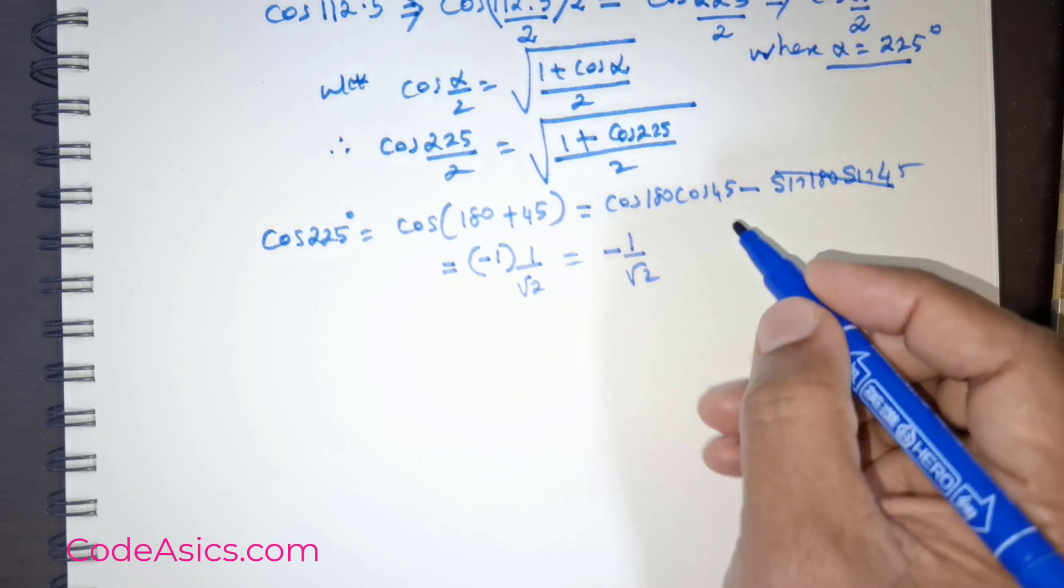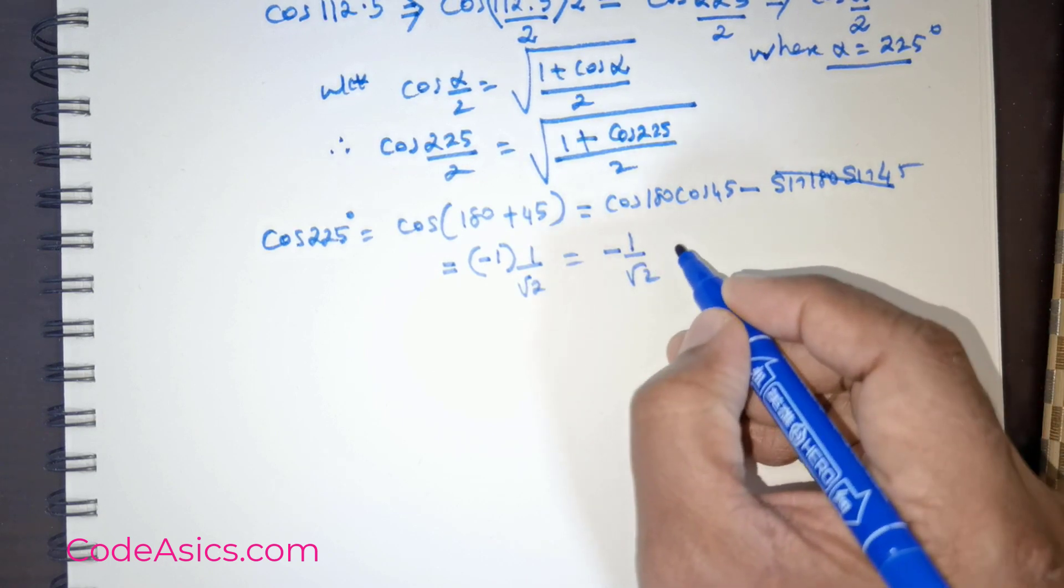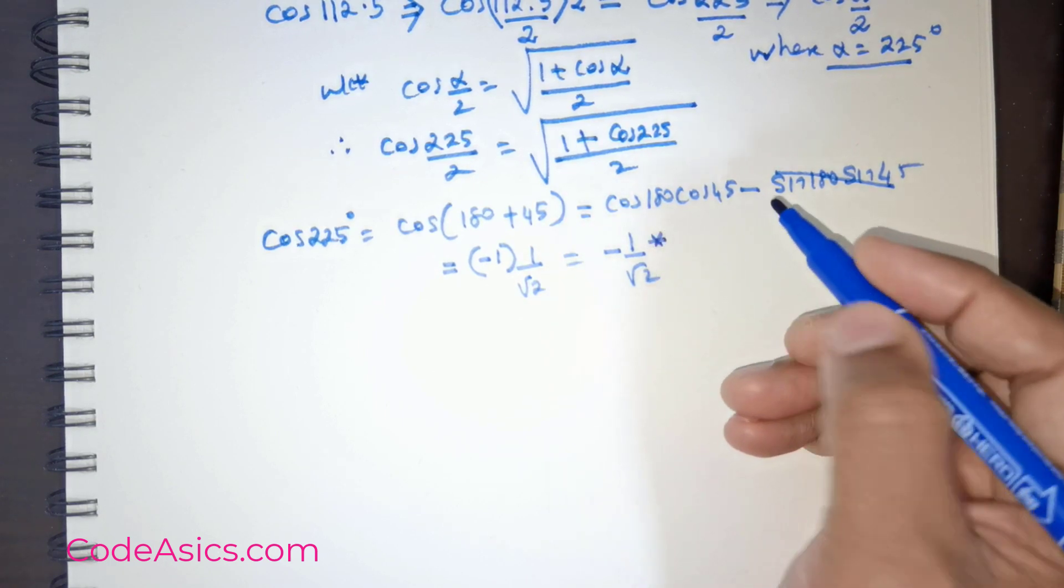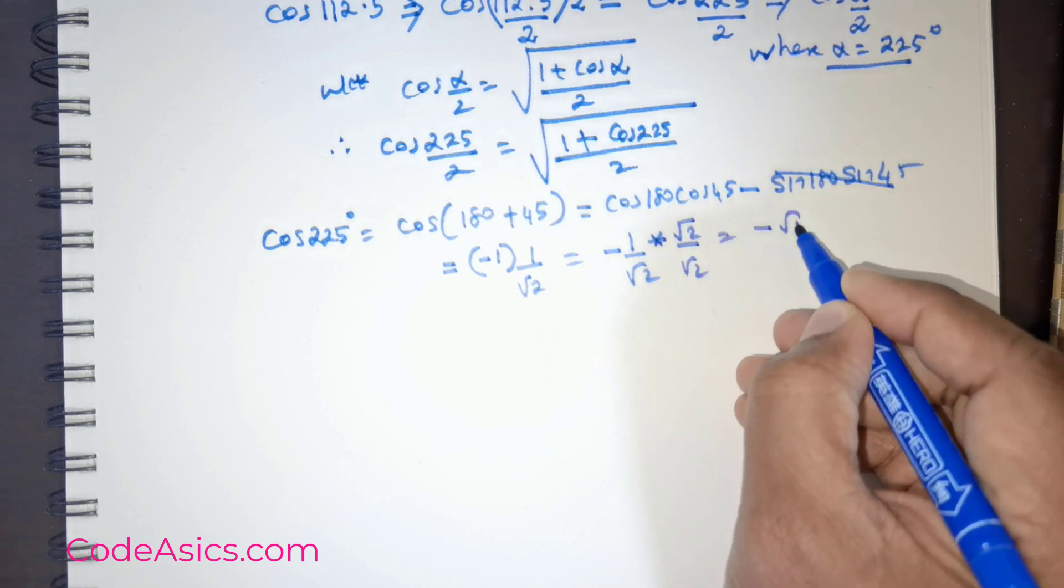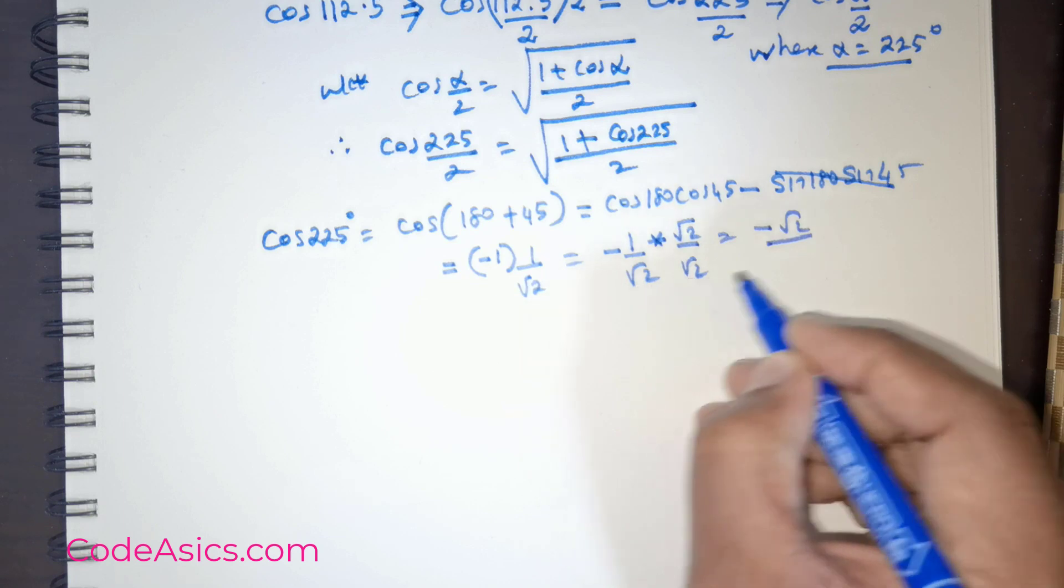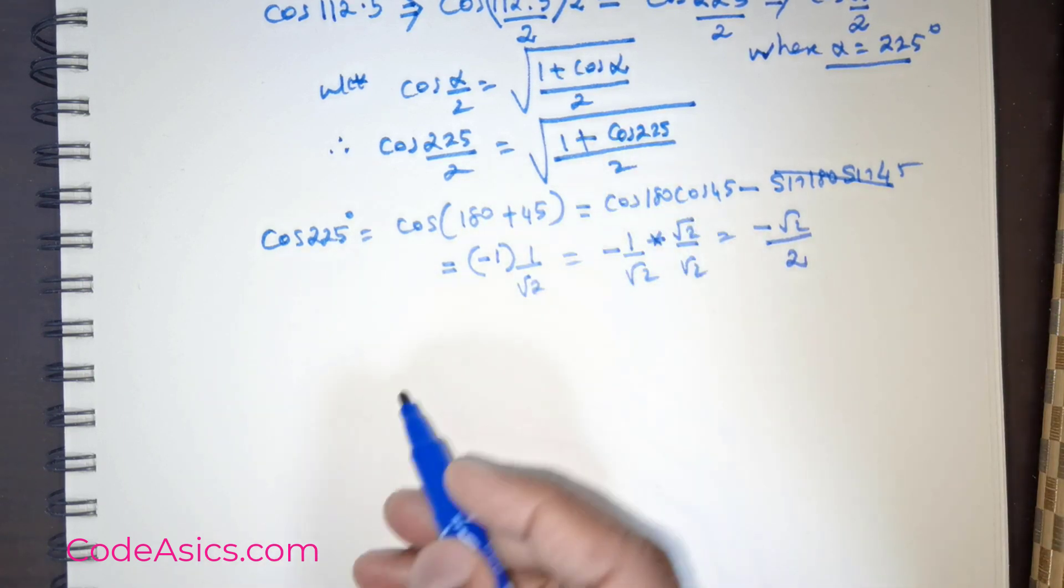What we can do to simplify the calculation is multiply by root 2 and divide by root 2. This is going to be negative root 2 divided by 2, since root 2 times root 2 equals 2. This value I can always use.